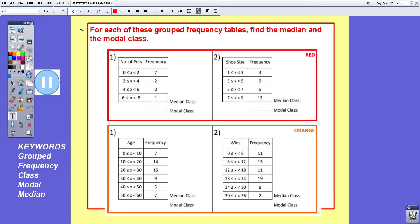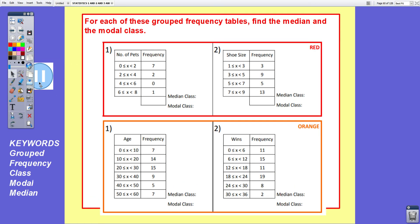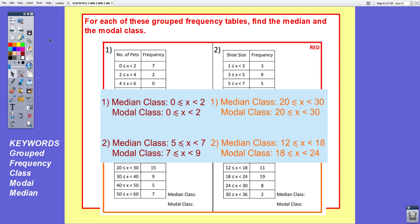Now some questions for you to do. For each of these grouped frequency tables, find the median class and the modal class. You'll need to copy these down. Although you may actually not need to copy these down, you may be able to do these without copying them down. But you will still have to show some workings. Pause the video please and have a go at these questions.